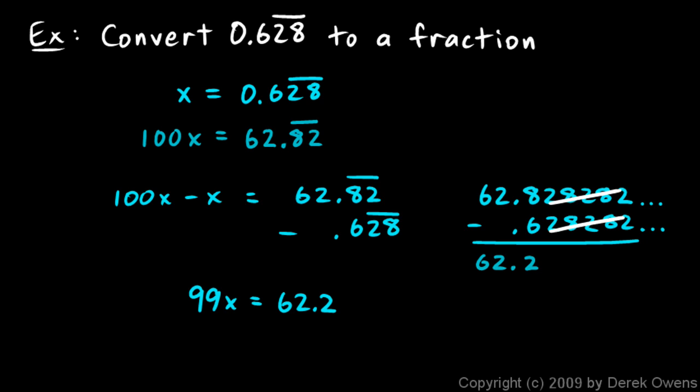Then I can divide both sides by 99, and the 99's cancel out, and I'm left with x is equal to 62.2 over 99. To get rid of that decimal point right there, I'll multiply the top and the bottom by 10, and I get 622 over 990. And I can reduce that. That, in fact, reduces to 311 over 495.